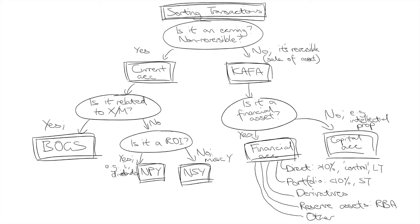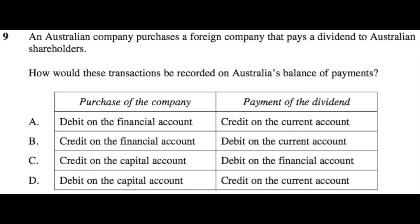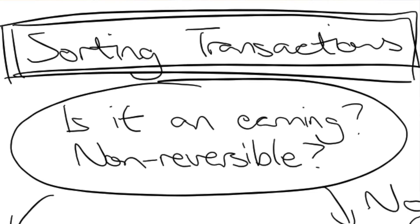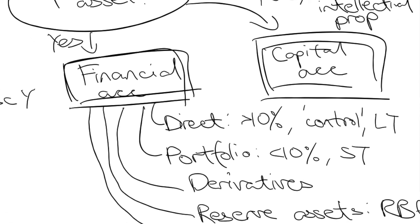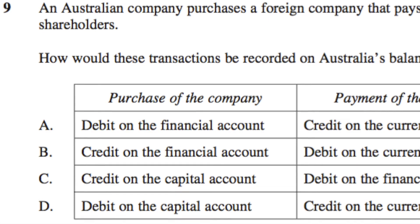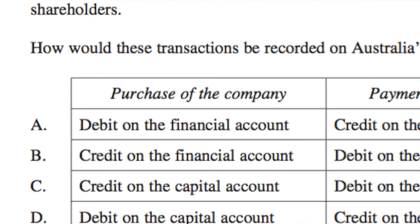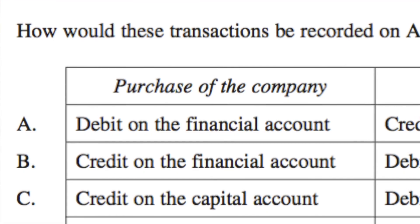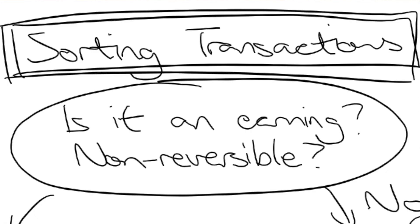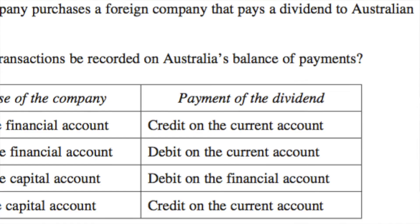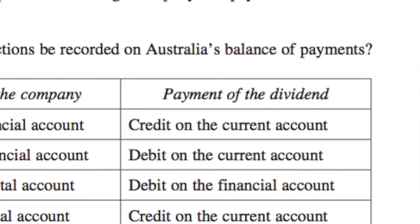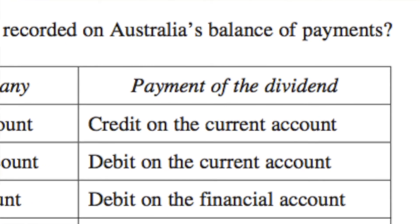So if you follow the rules in this flowchart, you should be able to sort most transactions into the balance of payments. Let's try this out with the 2019 HSC question 9 multiple choice, which has two transactions to sort. First: Australia purchasing a foreign company. Is this non-reversible? No. Is it related to financial assets? Yes — so it's recorded in the financial account, direct investment to be precise, because it's a controlling share and more long-term. It's also a debit because we're sending money overseas. From this, we already know the answer is A. The second transaction: Australian shareholders receive a dividend. Is a dividend non-reversible? Yes — it's somebody's earning, so it goes in the current account, confirming the answer is A. More precisely, dividends are a return on financial investment, so they're recorded in the NPY account.